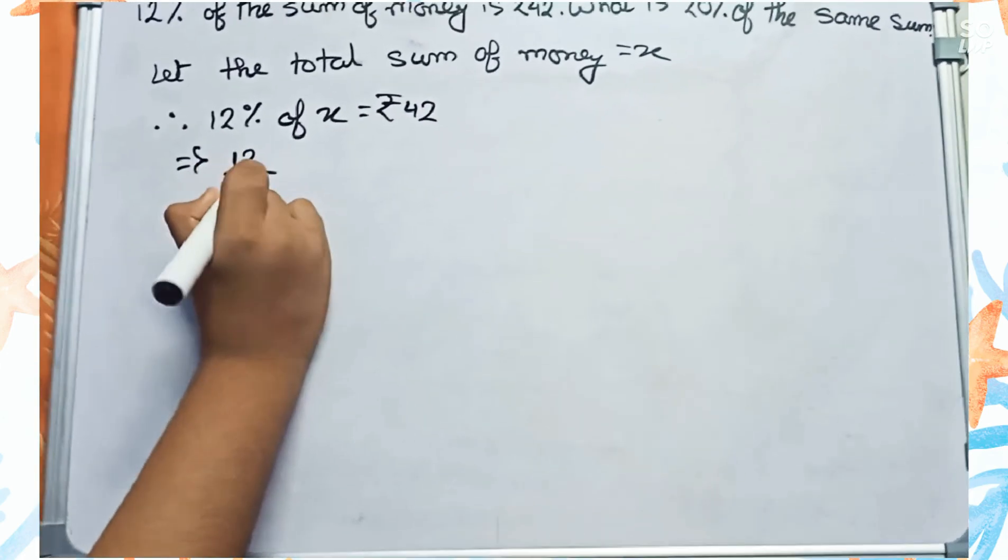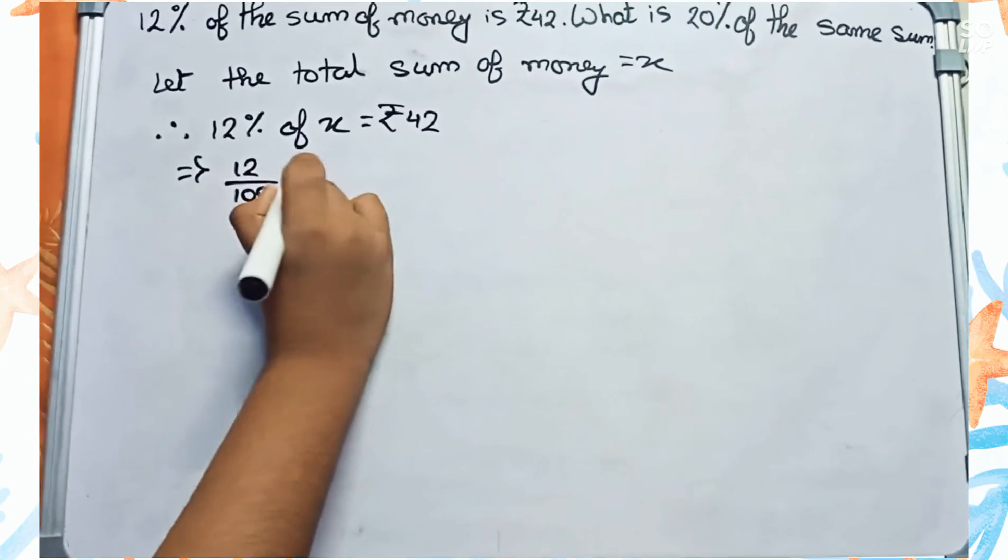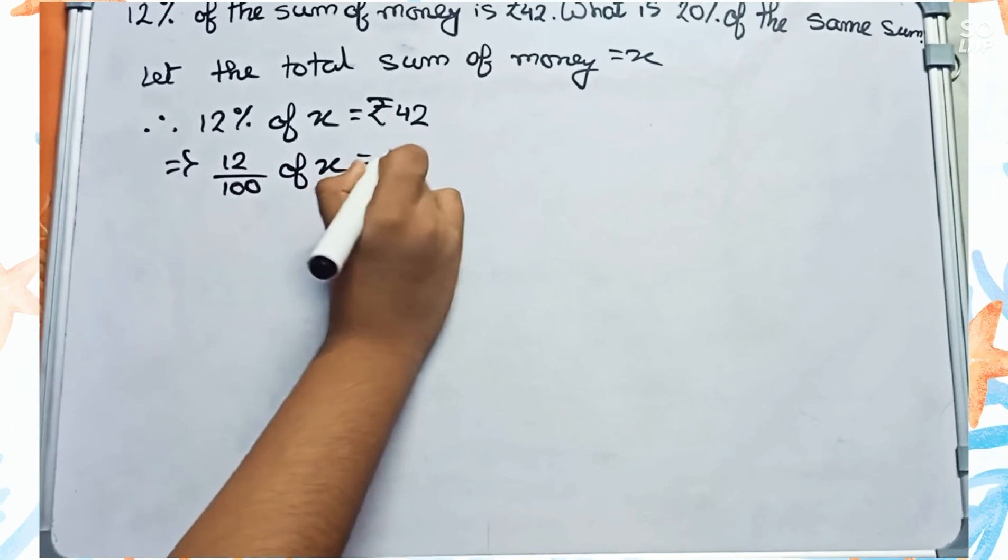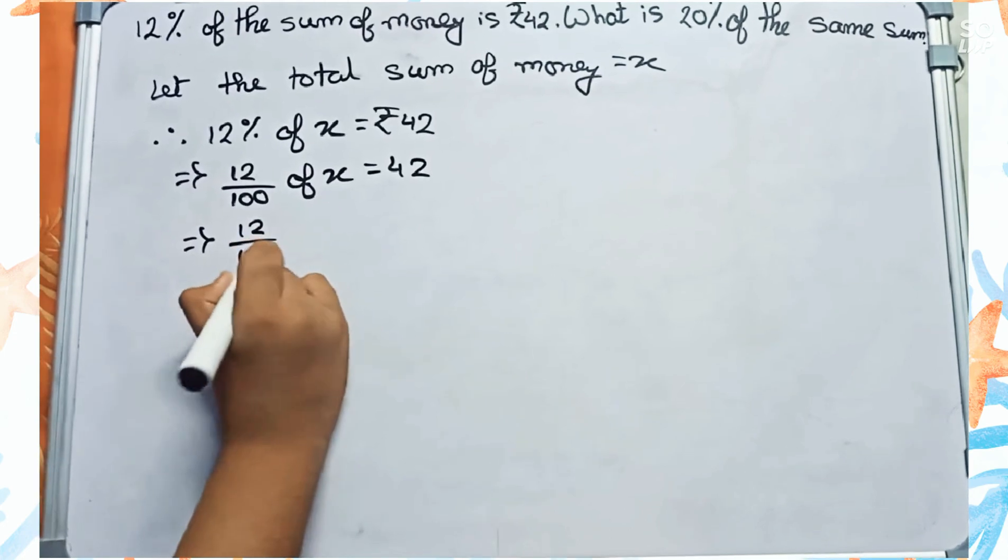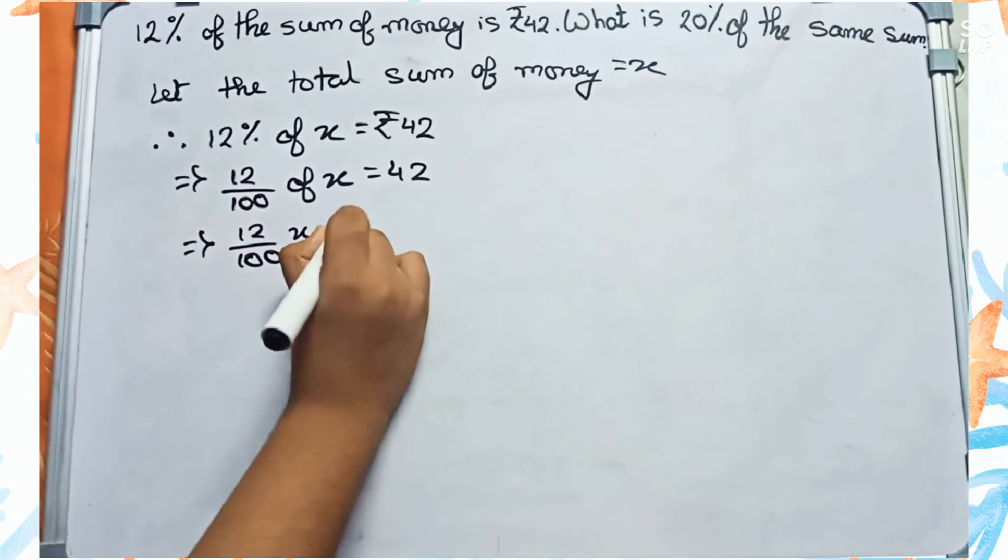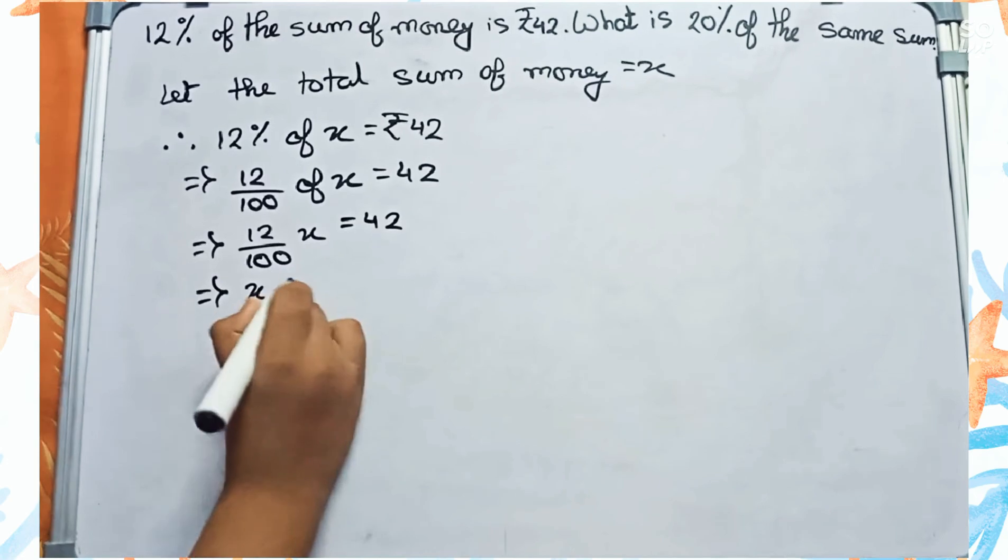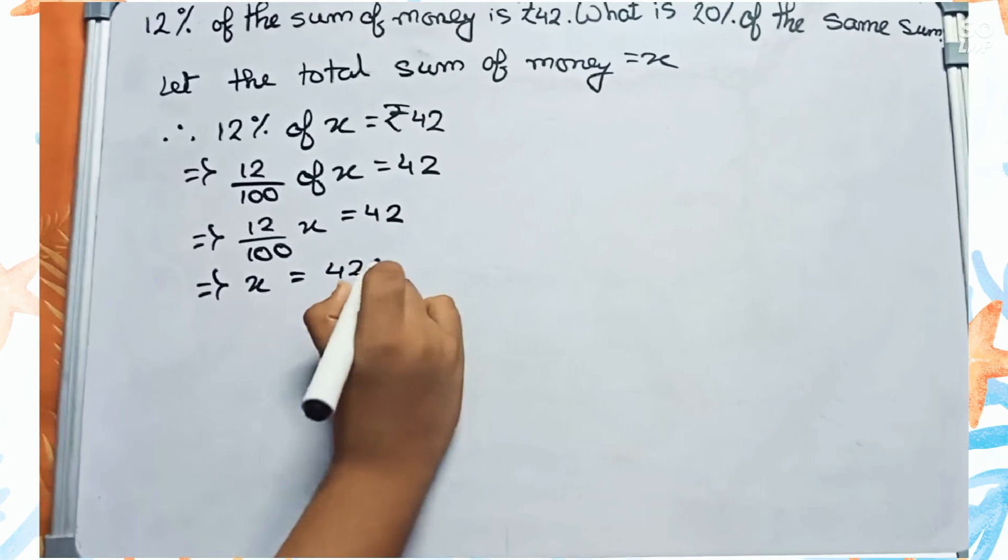And 12 by 100 X equals to 42, or X equals to 42 into 100 by 12.